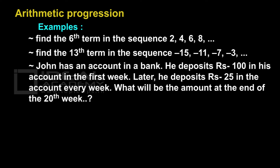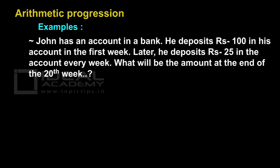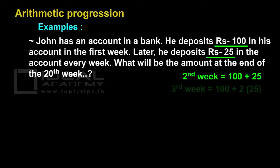To do such problems quickly and easily, we can derive a formula to find the general term, or the nth term, or the last term in the sequence. After saving Rs. 100 in the first week, John saves Rs. 25 every week. Therefore, the common difference is Rs. 25. John's account balance: first week Rs. 100, second week Rs. 100 plus 25, third week Rs. 100 plus 2 into 25, and so on.